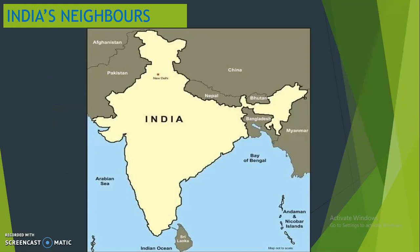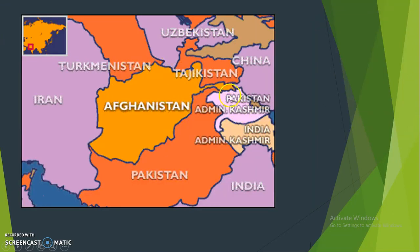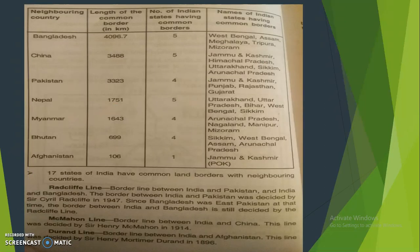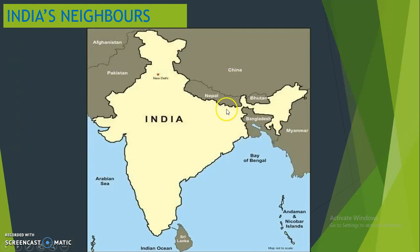India's neighbors are Pakistan, Afghanistan, China, Nepal, Bhutan, Bangladesh, Myanmar, and Sri Lanka. Afghanistan is our neighbor through Pakistan-administered Kashmir. India shares borders with all these countries.